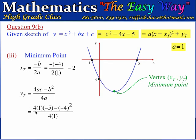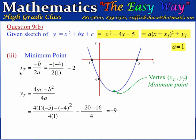Substituting the values: 4ac becomes 4 times 1 times negative 5, minus negative 4 squared, divided by 4 times 1. That gives negative 20 minus 16, divided by 4, which equals negative 36 divided by 4, giving negative 9. So the x-value at the turning point is 2 and the y-value is negative 9. The minimum point has coordinates (2, negative 9).